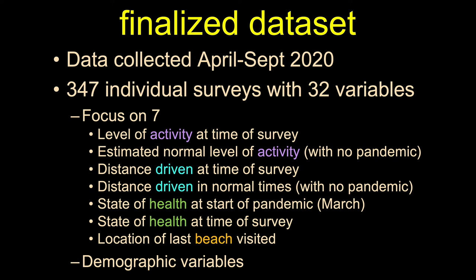The seven variables I'm focusing on are activity level — both at the time of the survey and what people estimated their non-pandemic activity level was — how far they've driven in the past week versus how far they'd be driving in a typical week, and what they felt their health was like now versus before the pandemic started. The activity and health measures are on a relativistic scale from minus three to plus three. I'm also looking at the last beach people visited, and I'll probably use some demographic variables as well, though that's not my focus today.